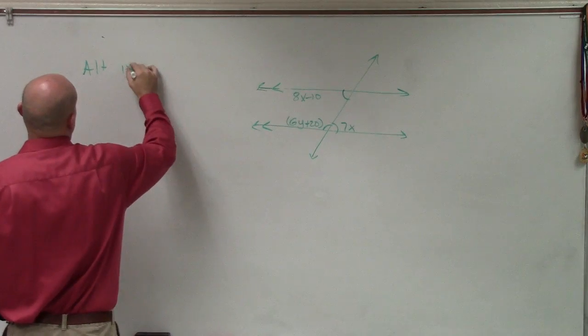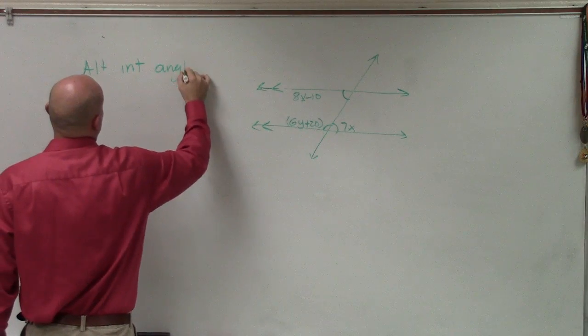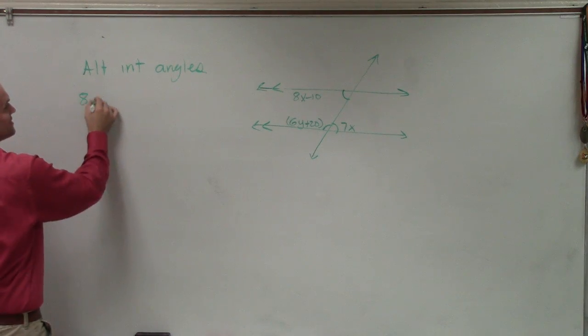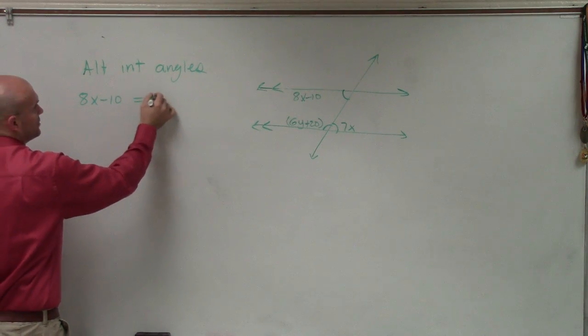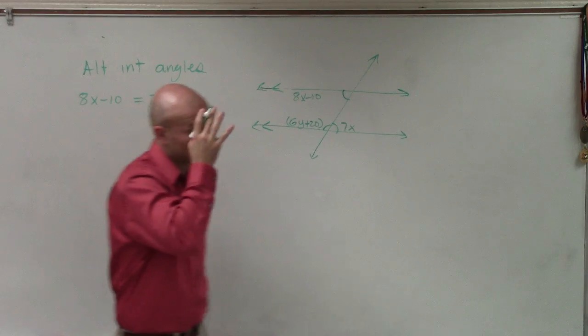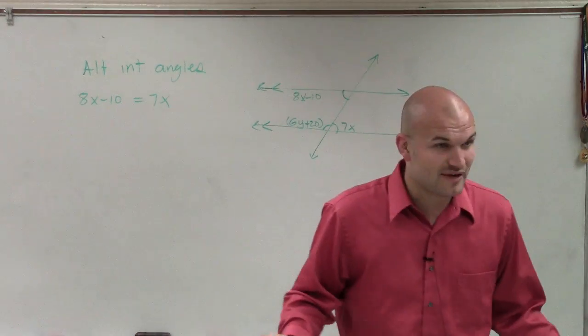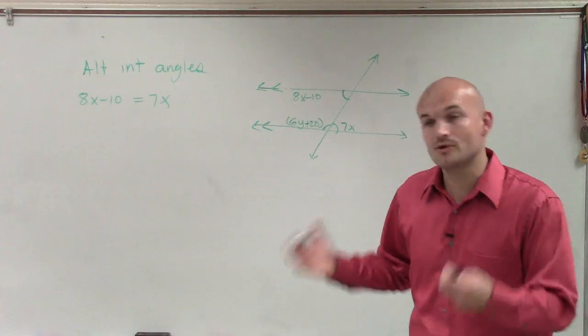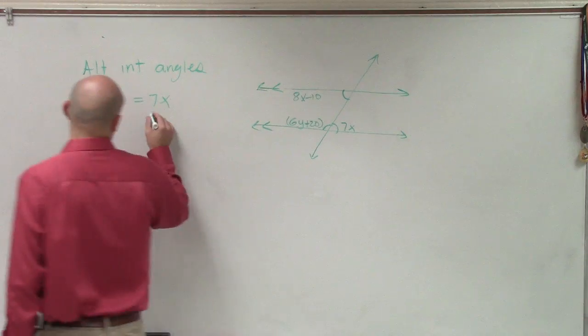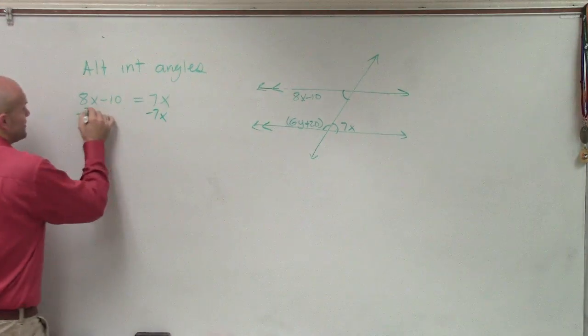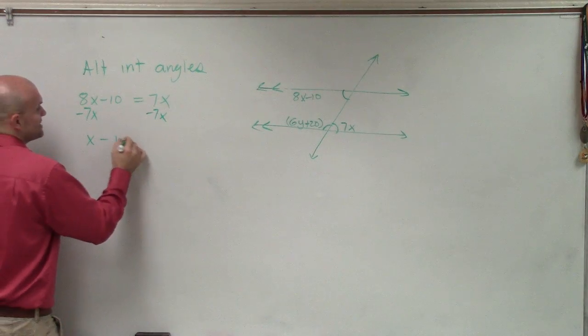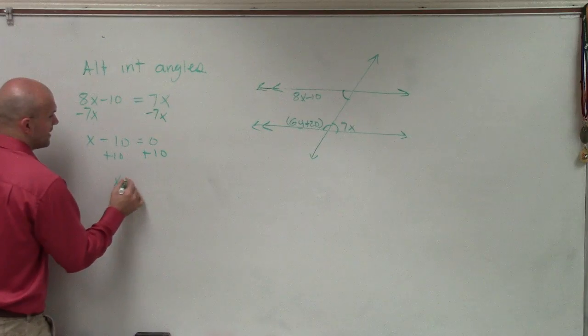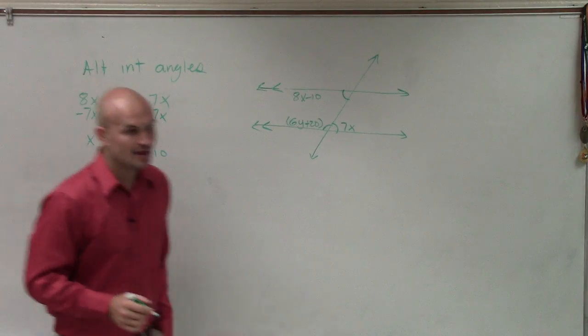I'll just do alt interior angles. So we have alternate interior angles. So therefore, it's 8x minus 10 equals 7x. Right? So now can we find the value of x? Right, now we have an equation. So of course we can. So we can just get the x on the same side. So if I have x minus 10 equals 0, and then add the 10 to the other side, so x equals 10.